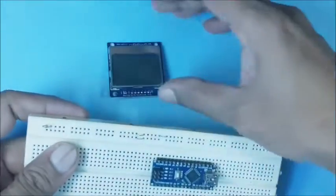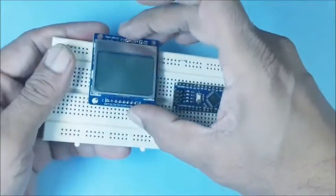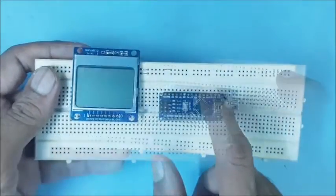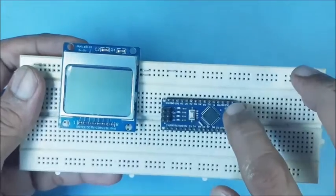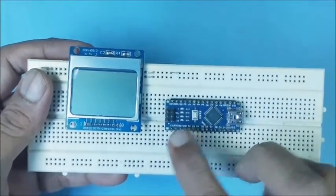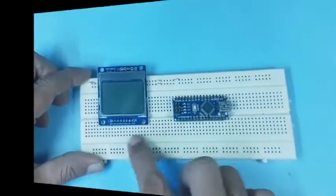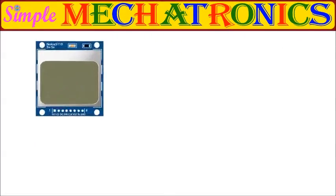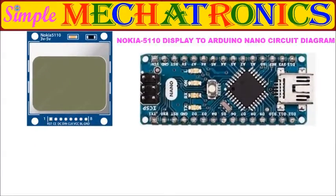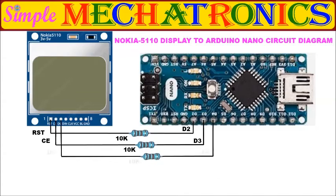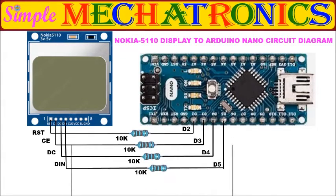Now we will connect Nokia 5110 to Arduino Nano using a breadboard. Connect the 3.3 volts pin and ground pin of Arduino to VCC and ground pins of Nokia 5110. This is the circuit diagram to interface Nokia 5110 with Arduino Nano. The 10 kilo ohm resistors are used here to protect the 3.3 volt signal pins of Nokia 5110 from the 5 volt signal pins of Arduino.